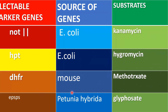These are various genes which have been isolated from bacteria such as E. coli, mouse, and Petunia hybrida. These genes provide resistance to antibiotics. The selective agents include kanamycin, hygromycin, methotrexate, and glyphosate.